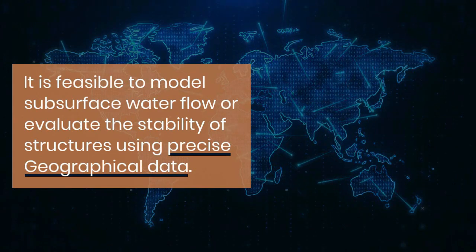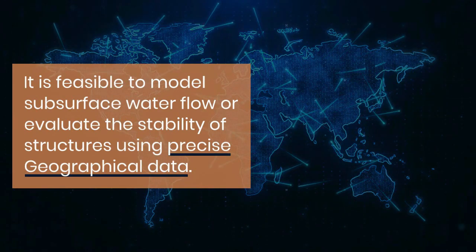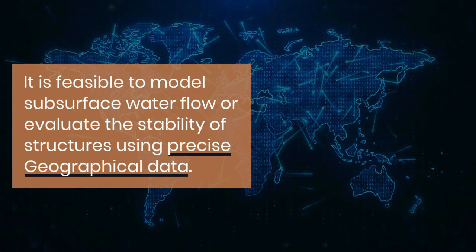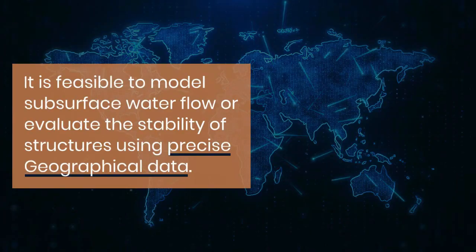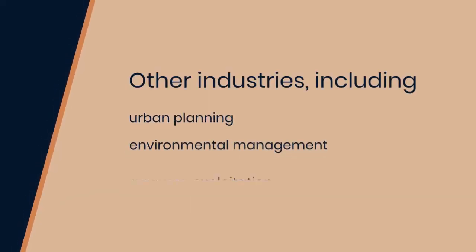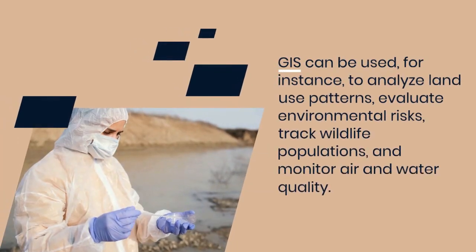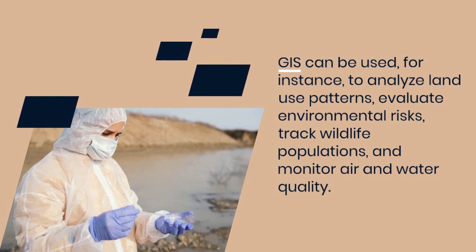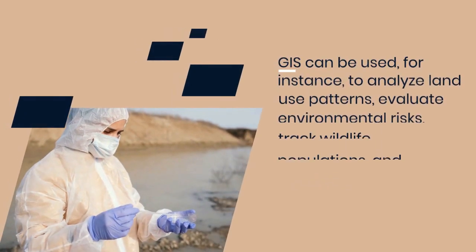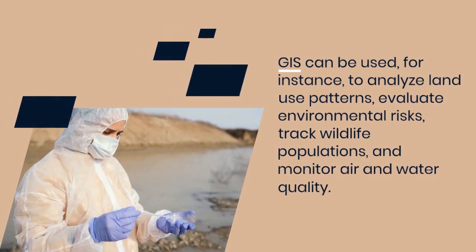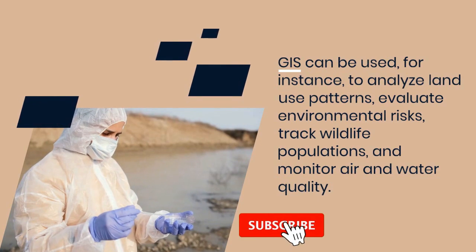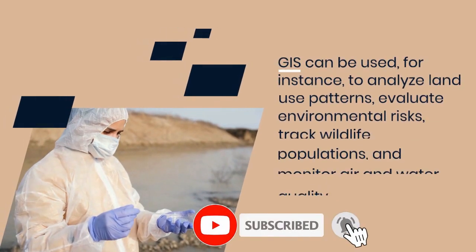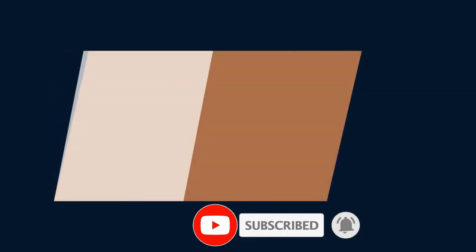It is feasible to model subsurface water flow or evaluate the stability of structures using precise geographical data. Other industries, including urban planning, environmental management, resource exploitation, and more have used GIS technology. GIS can be used to analyze land use patterns, evaluate environmental risks, track wildlife populations, and monitor air and water quality.